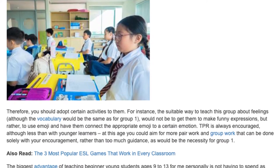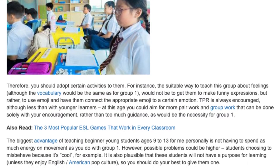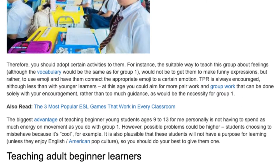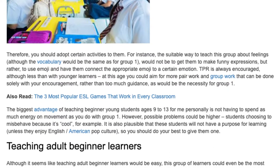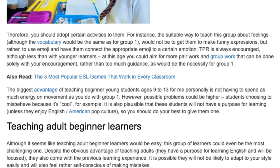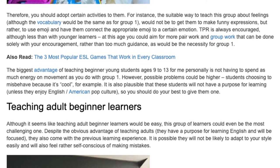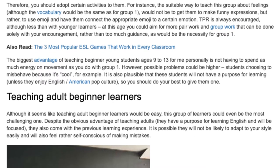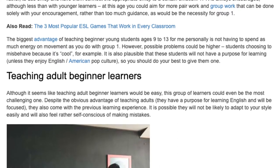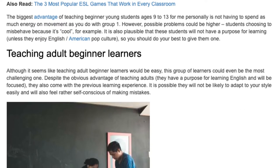For instance, the suitable way to teach this group about feelings — although the vocabulary would be the same as for Group 1 — would not be to get them to make funny expressions, but rather to use emoji and have them connect the appropriate emoji to a certain emotion. TPR is always encouraged, although less than with younger learners. At this age you could aim for more pair work and group work that can be done with your encouragement rather than too much guidance. The biggest advantage is not having to spend as much energy on movement as with Group 1. However, possible problems could be higher misbehavior because it's considered cool. It is also plausible that these students will not have a purpose for learning unless they enjoy English-American pop culture, so you should do your best to give them one.